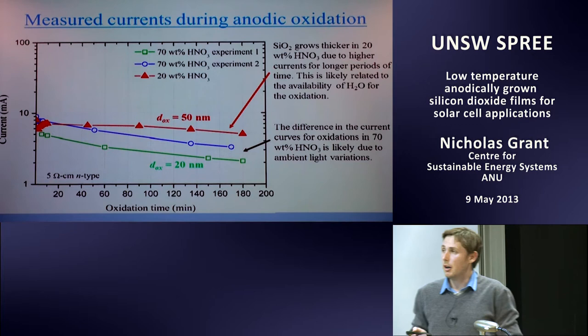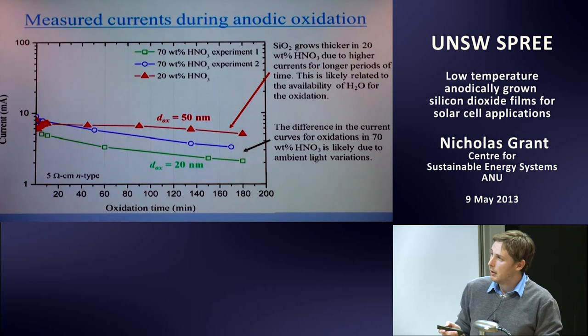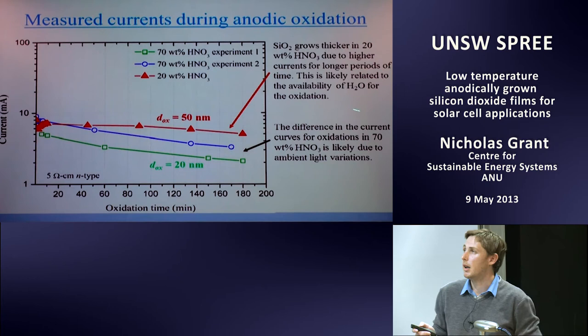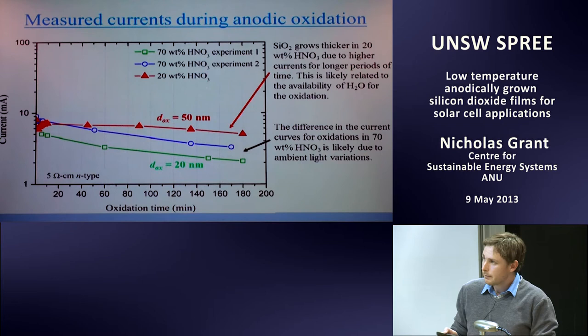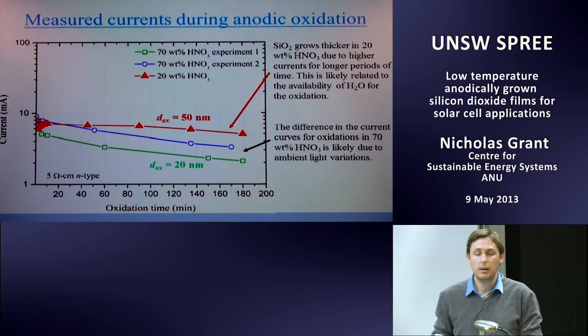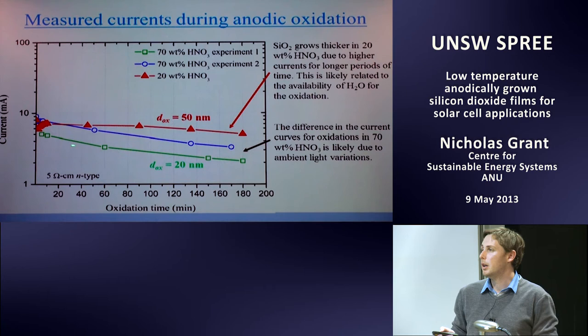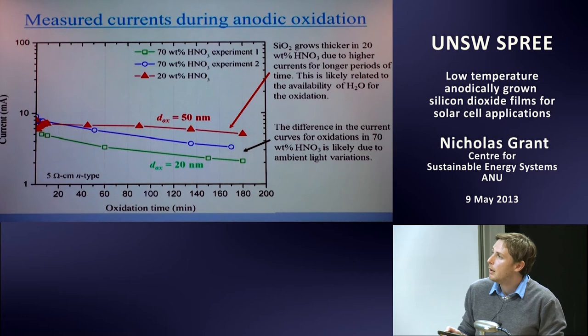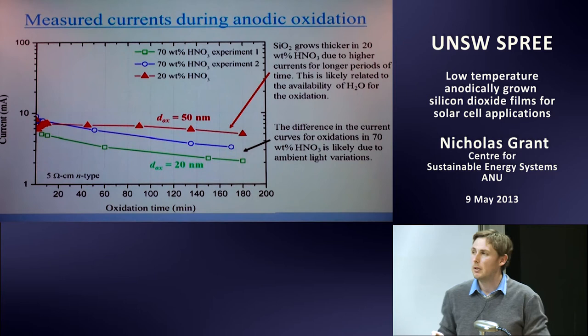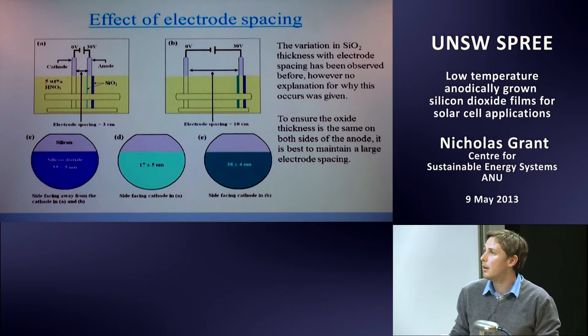Looking at the current profiles as a function of oxidation time: for thicker oxides growing in 20% nitric acid, the current remains stable for a long period — likely related to a continuous supply of water to the interface. For oxides grown in 70% nitric acid, the current falls off quite early, indicative of a thickening oxide. The reduction as the oxide grows thicker is possibly related to decreasing water supply to the interface.